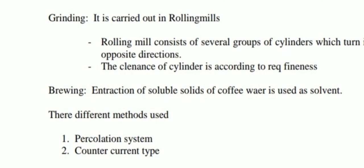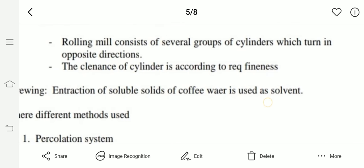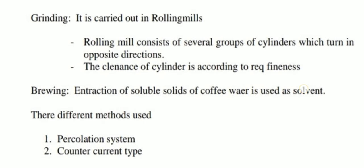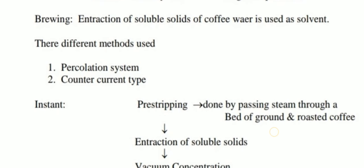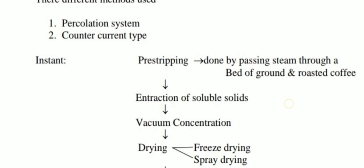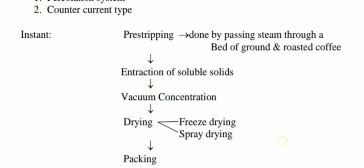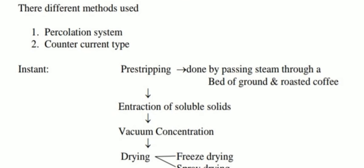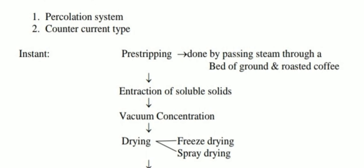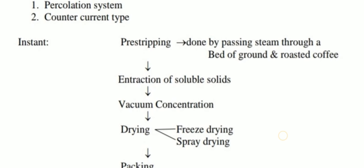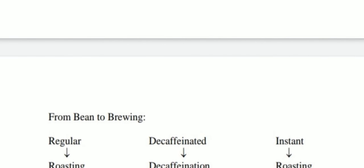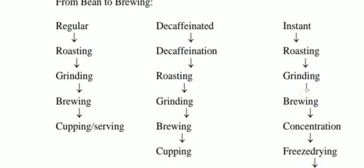Finally, grinding is done by rolling mills — cylinders which turn in opposite directions to grind. Then brewing: coffee machines brew coffee through steam or counter-flow of hot water in coffee shops. Brewing can be done by machine at home or at a coffee shop by percolation (steam passing method) or counter-current (hot water passing method) to extract as much flavor as possible. This is the bean-to-brewing flow chart — note it down and make handwritten notes from this lecture.